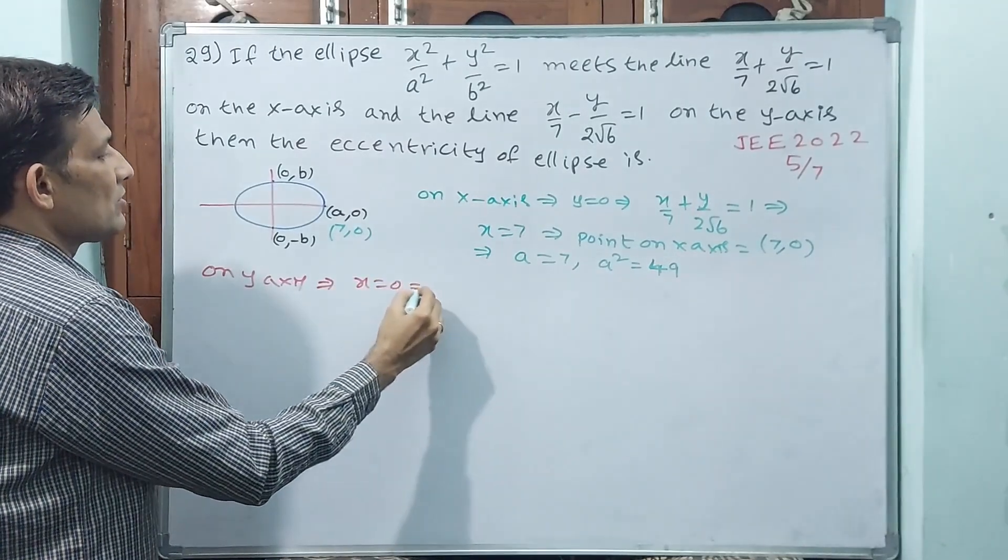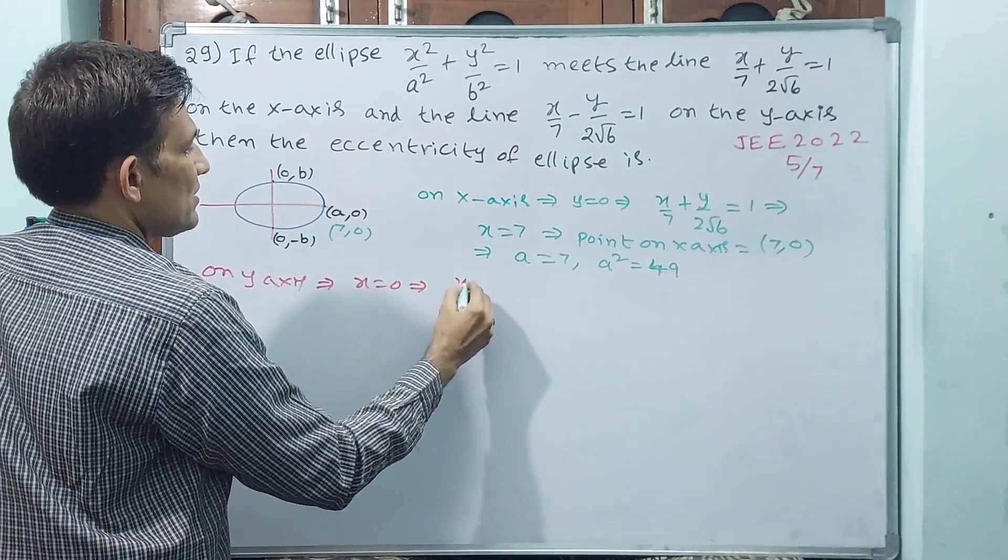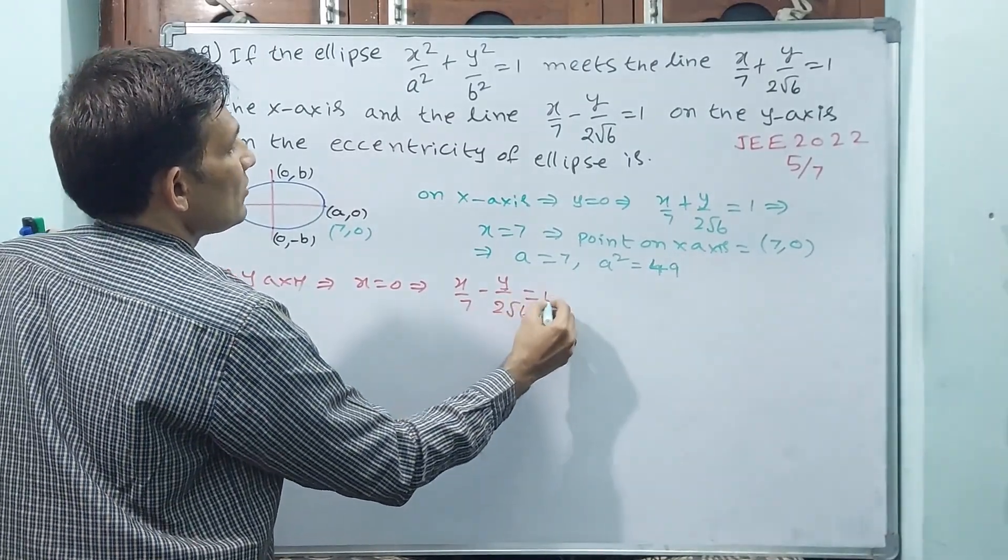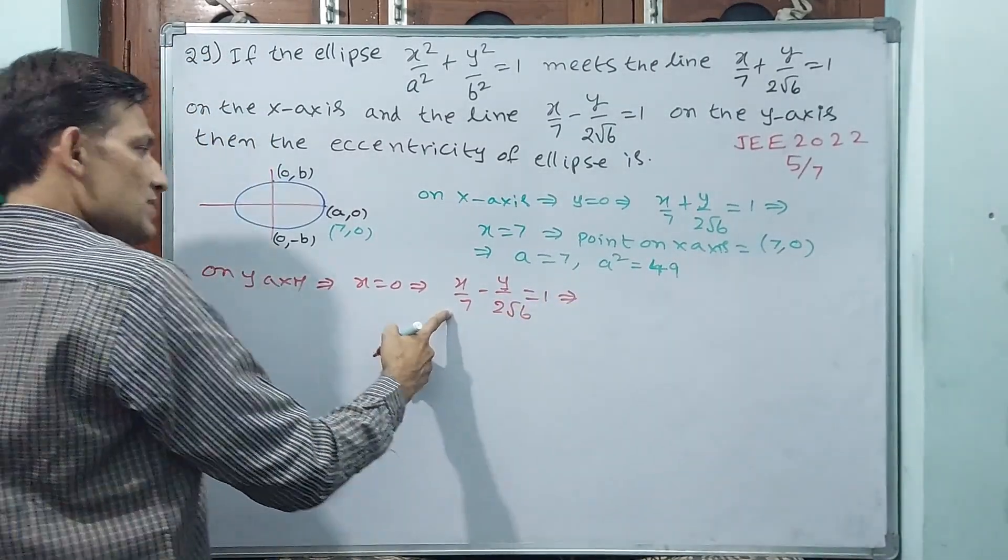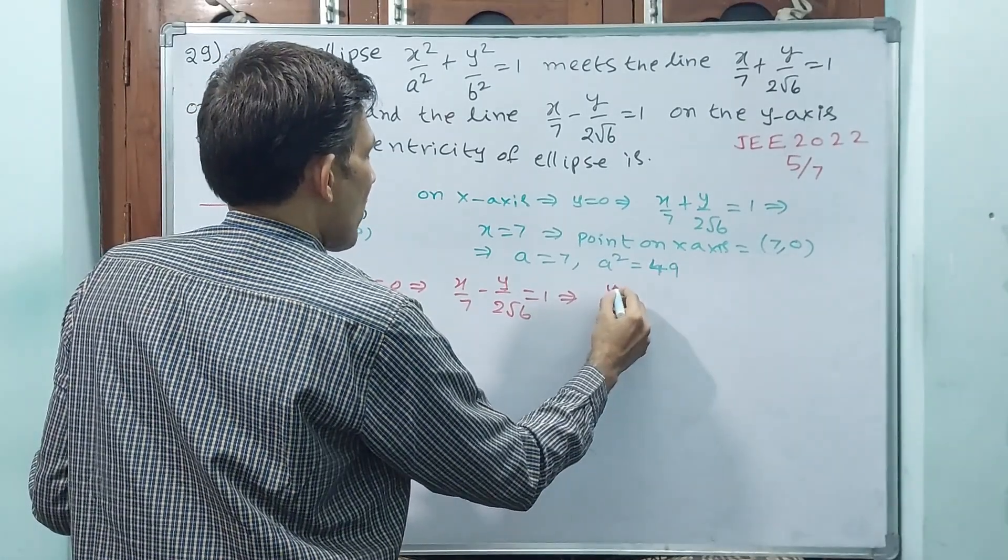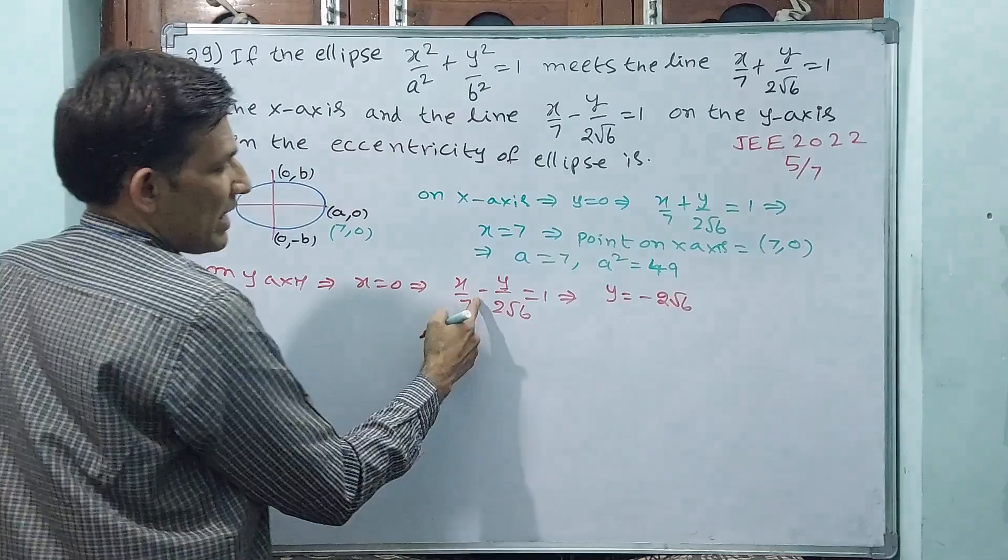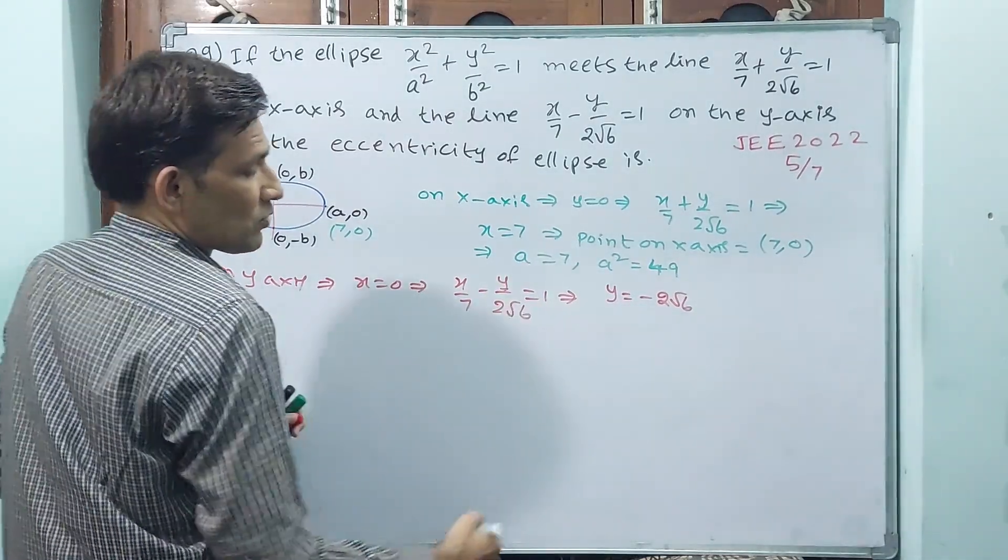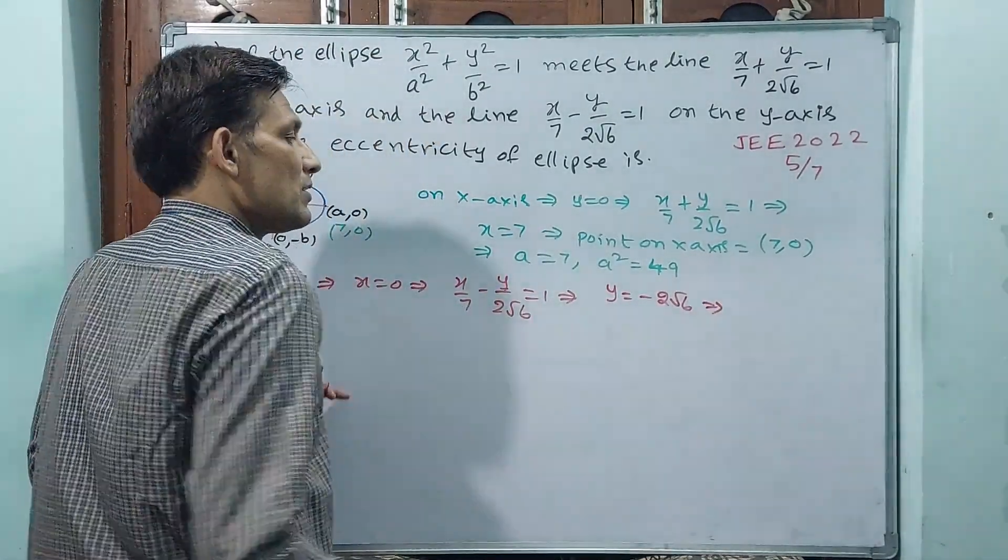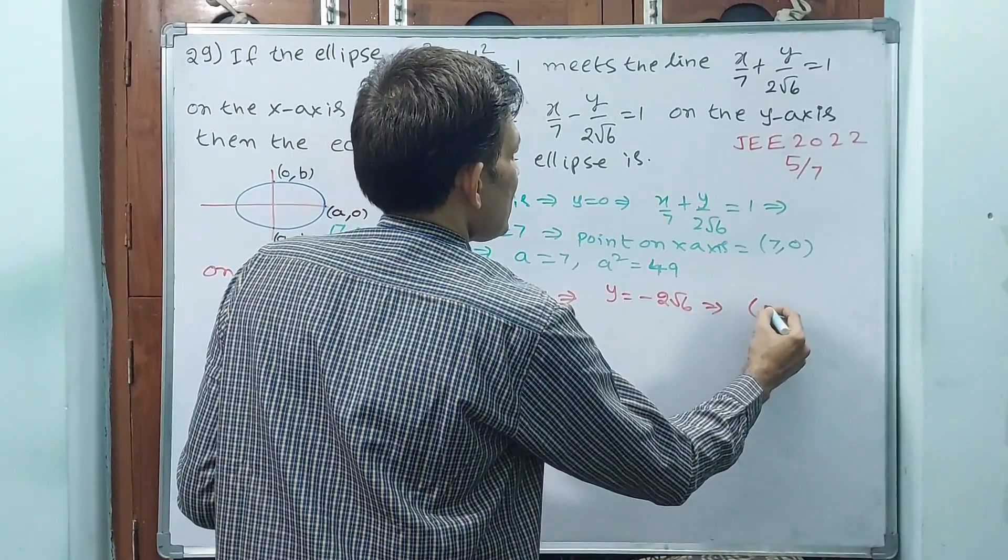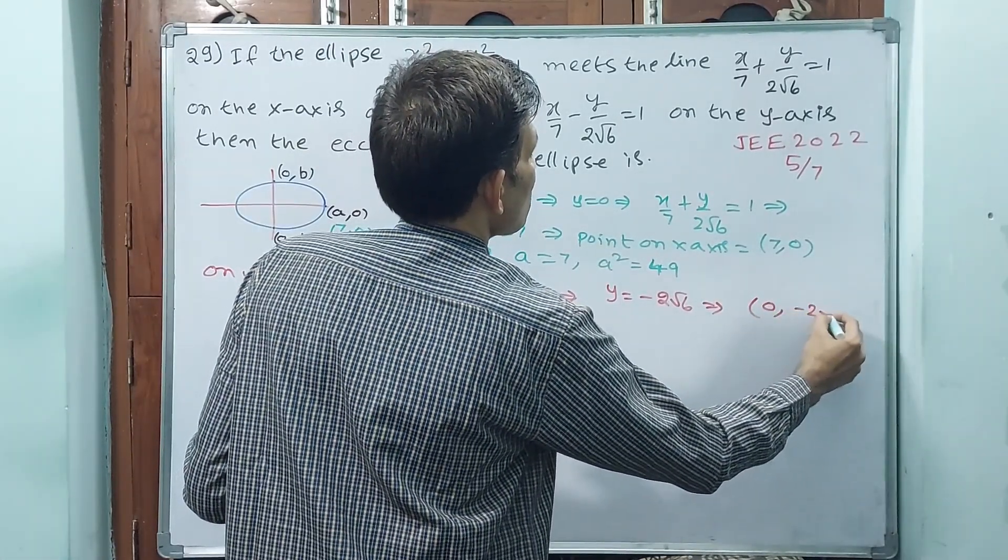x = 0 implies x/7 - y/(2√6) = 1 implies x is 0, so y = -2√6. Minus I am taking that side, -2√6. That implies point, this point we can say (0, -2√6).